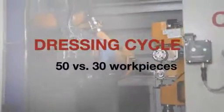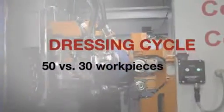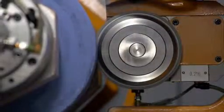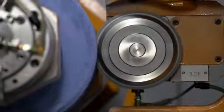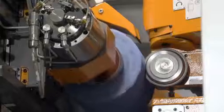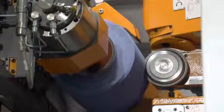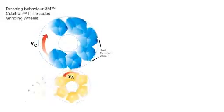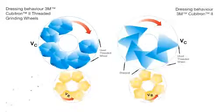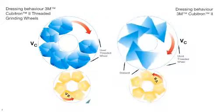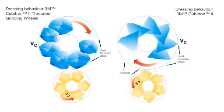When grinding with 3M Cubitron 2 threaded wheels, the demands on dressing are substantially reduced in terms of lower dressing frequencies and higher tool life of the diamond dressing rolls. Also, the loads on the diamond dressing rolls are lower. Instead of hammering away at the abrasive grit as was the case with other abrasives, small segments are precisely removed to maintain the geometrically defined cutting edges.